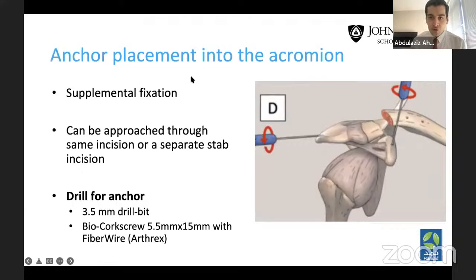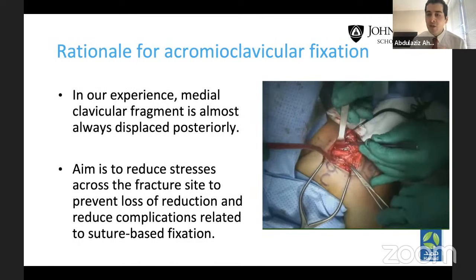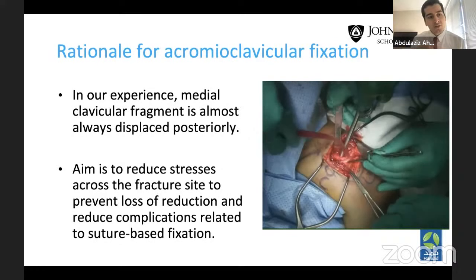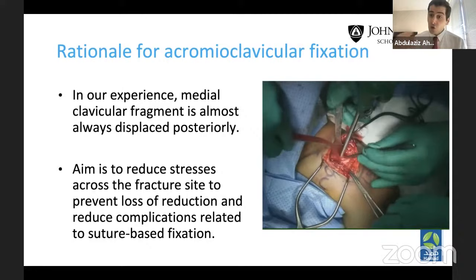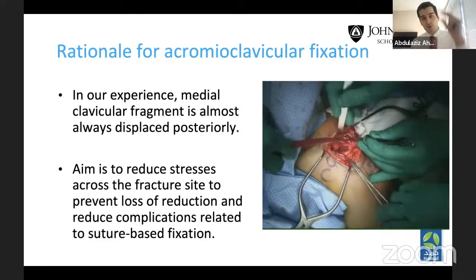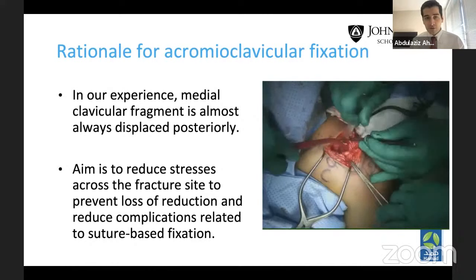For the acromial anchor, we use a 3.5 mm drill bit and a smaller corkscrew anchor, because the bone is much softer on that end. The rationale for adding the acromioclavicular fixation is that in our experience, the medial clavicular fragment displaces almost always posteriorly. Fixing the coracoid to the clavicle restores vertical stability, but there may be residual horizontal instability that could compromise the fixation. That's why we add horizontal stability via the acromion.